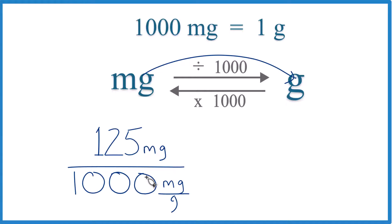we start out milligrams here. On the bottom, 1,000 milligrams per gram. That's the conversion factor. That way the milligrams cancel out. We're left with grams. That's what we're looking for.